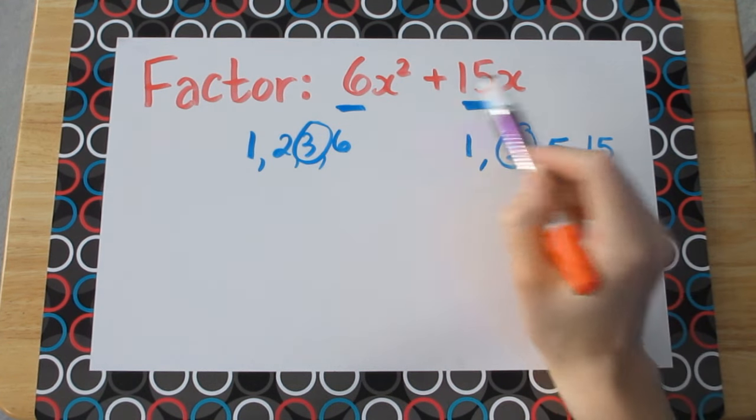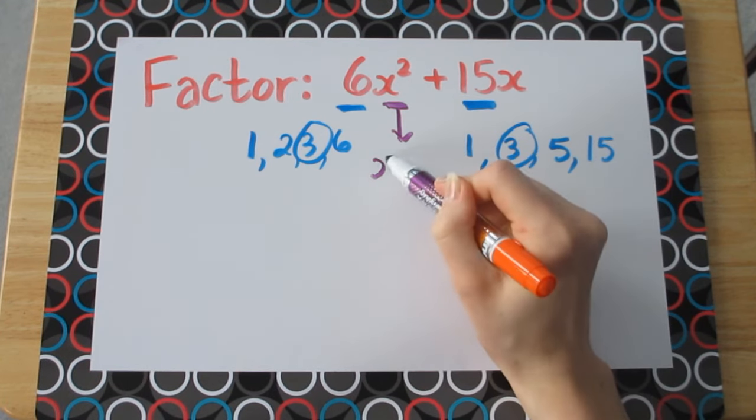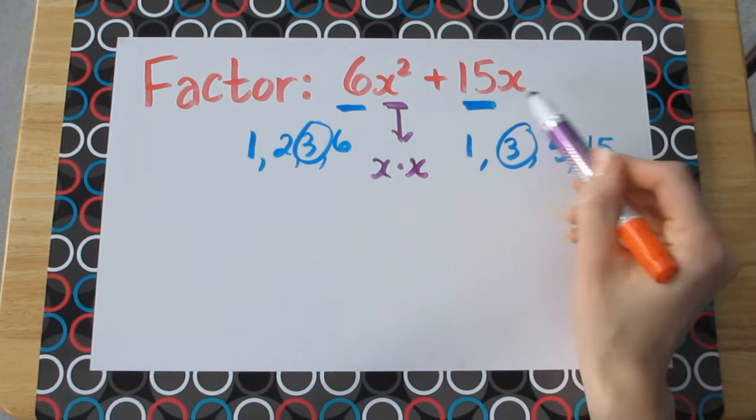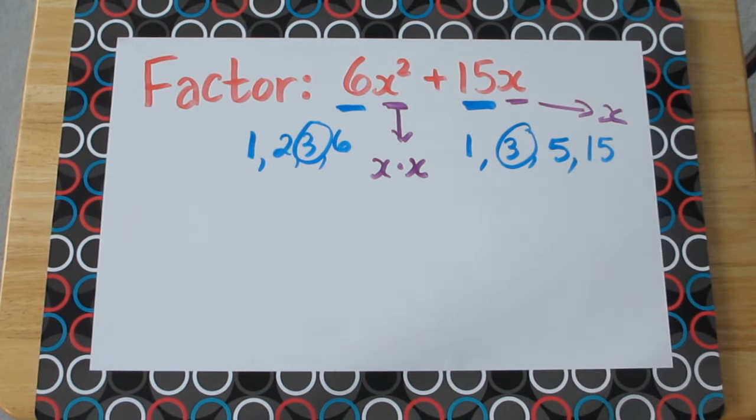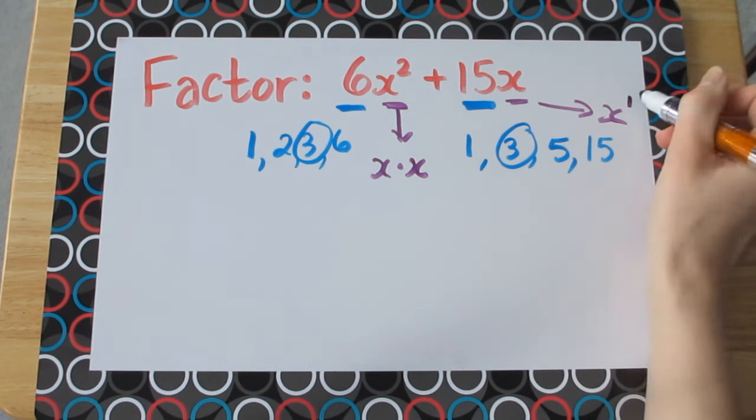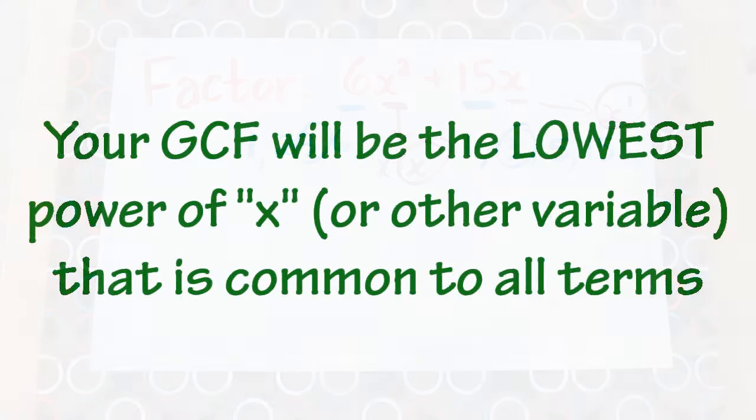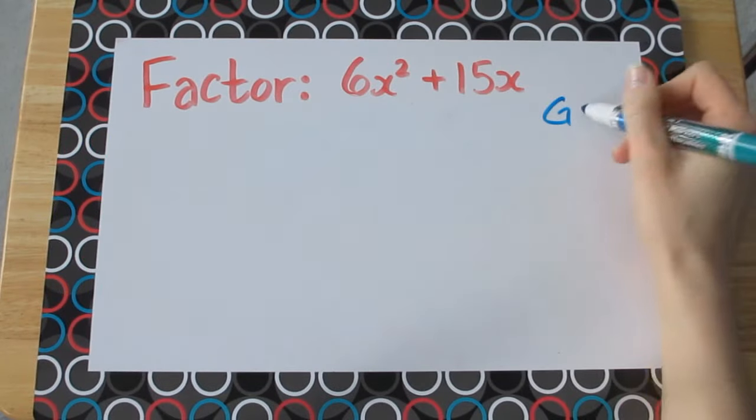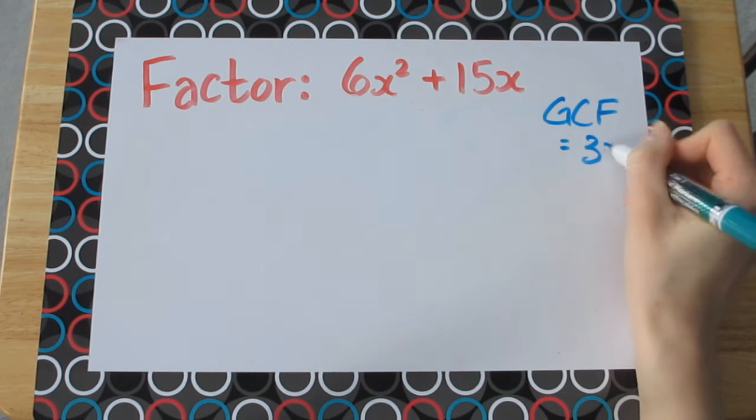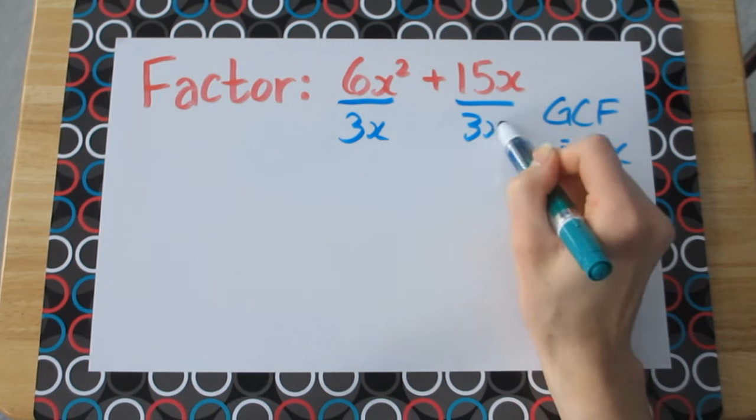Now let's take a look at the variables. Here we have an x squared, so that means you're multiplying x times x. For the 15x, this is just a single power of x. So that means that x to the power of 1 is the greatest common factor for these two terms. One way to think of it is the lowest power of x that is in common between your terms. So for this question we said that our greatest common factor was 3x, so let's just keep that in mind. This is what we're going to be dividing each term by.